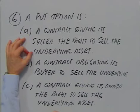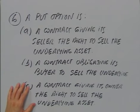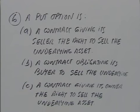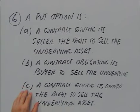A put option is: a contract giving its seller the right to sell the underlying asset, a contract obligating its buyer to sell the underlying, or a contract giving its owner the right to sell the underlying asset. The correct answer is C — a put option is a contract giving its owner the right, not the obligation, to sell the underlying asset at a fixed price in the future.